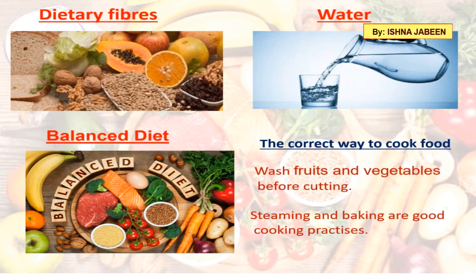Eating the right kind of food is not enough; it should also be cooked properly so that nutrients are not lost. One should wash fruits and vegetables before cutting, as washing cut fruits and vegetables removes many nutrients from them. Washing rice and pulses repeatedly also removes nutrients. Many useful proteins and minerals are lost if excess water is used during cooking. Overheating, over-boiling, and deep frying destroy nutrients present in food — vitamin C is easily destroyed due to overheating. Therefore, steaming and baking are good cooking practices as nutrients are not lost.